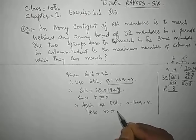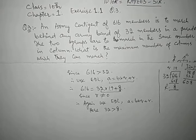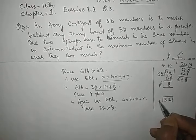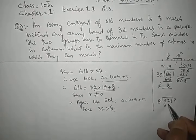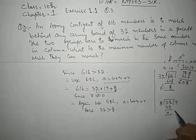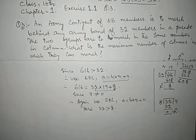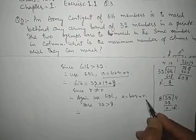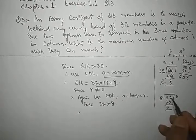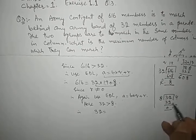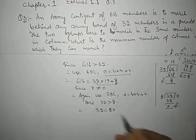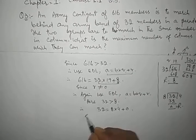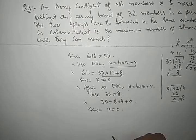Now 32 is greater than 8, so we apply Euclid's Division Lemma again. 32 divided by 8: 8 into 4 gives 32, remainder is zero. Therefore, writing the equation: 32 is equal to 8 into quotient 4, plus remainder 0. Since R is equal to zero, we stop.